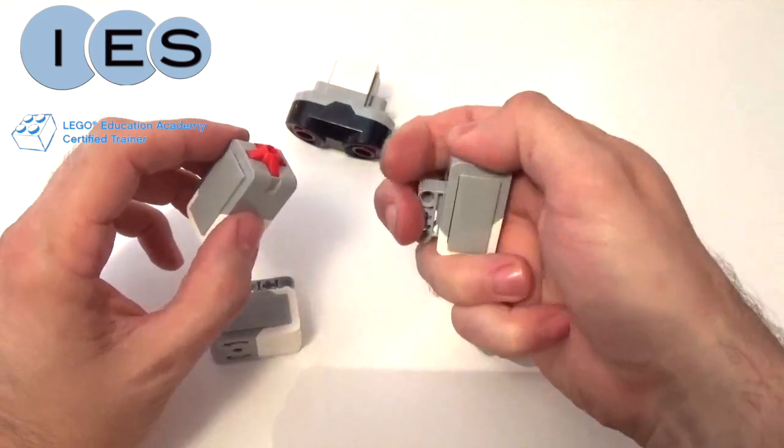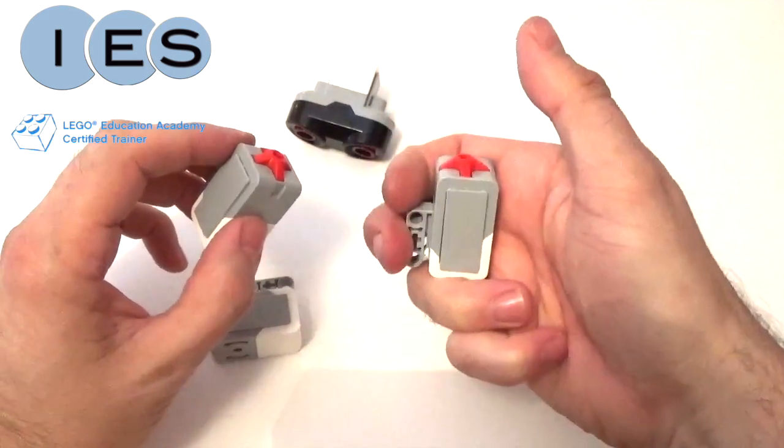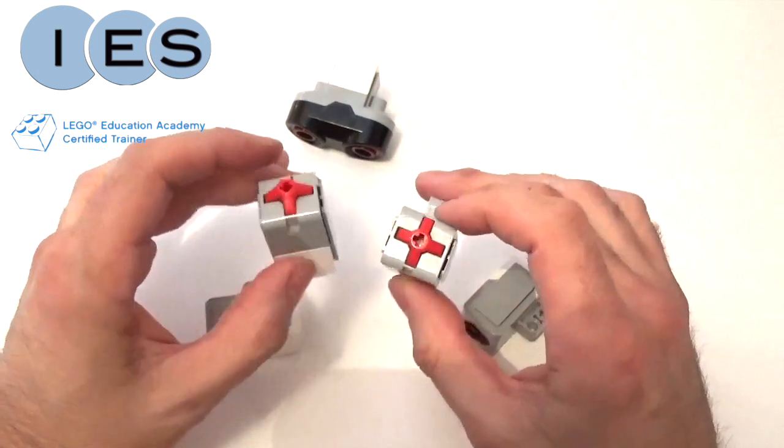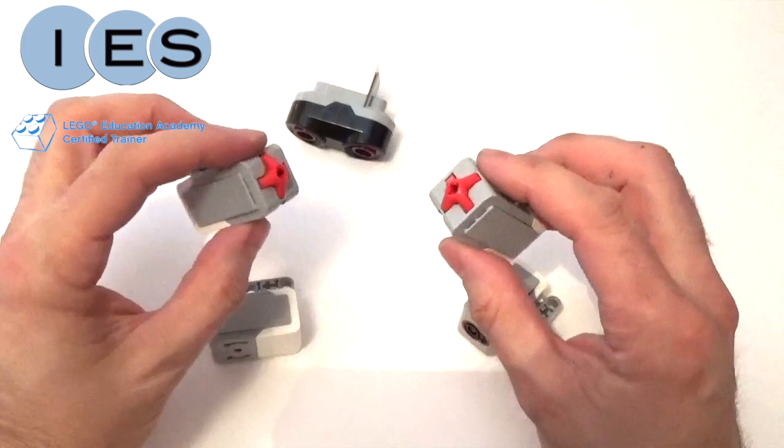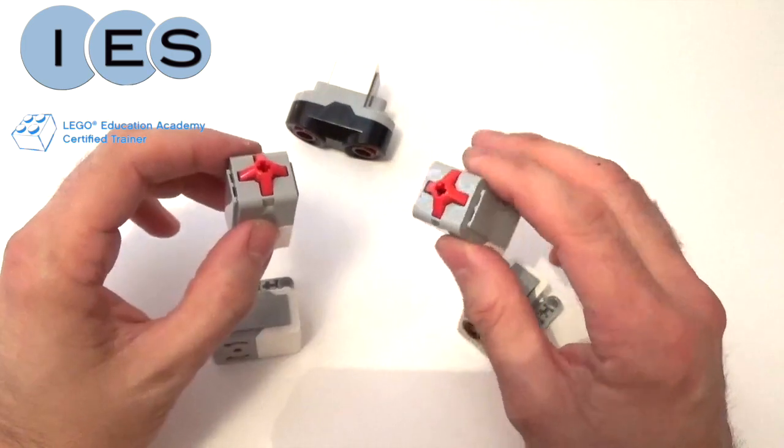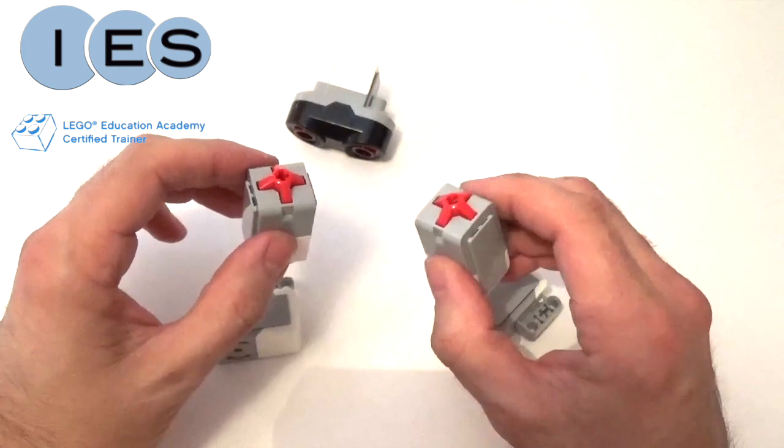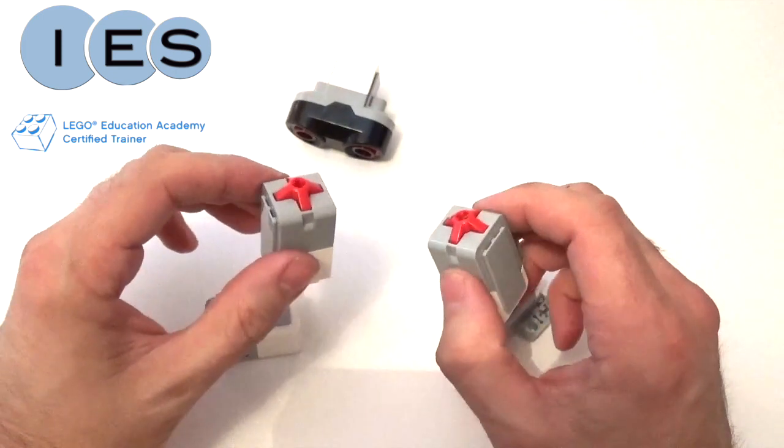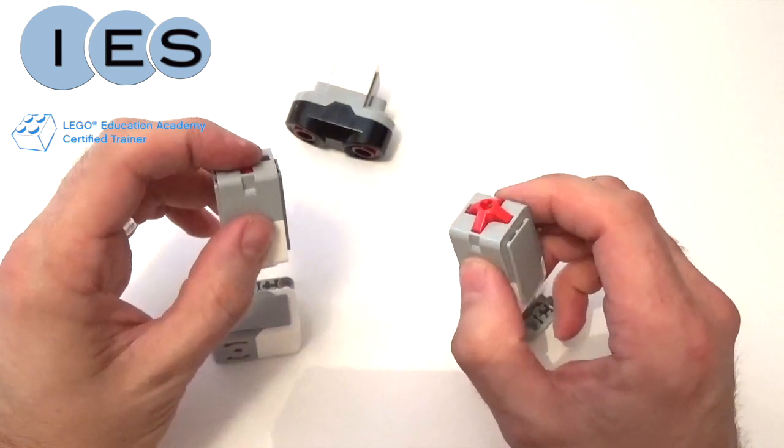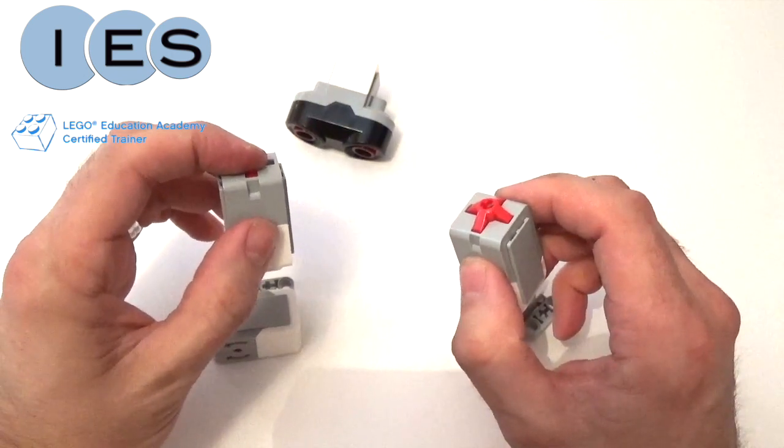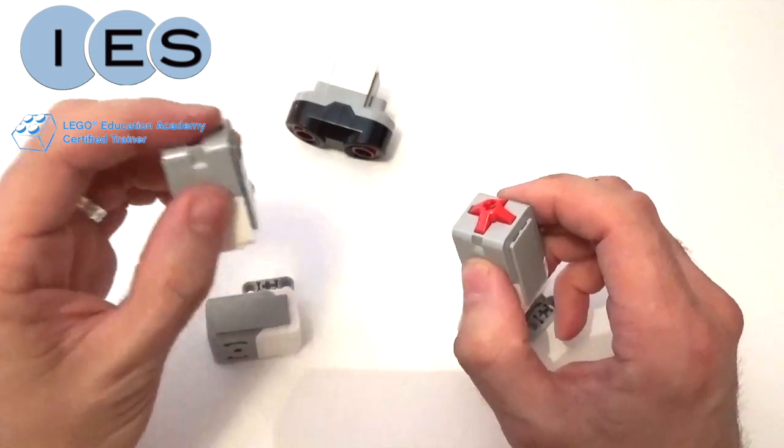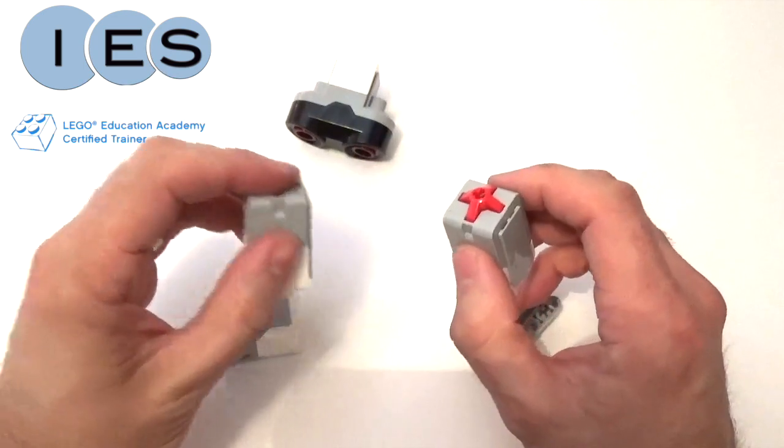The states are pressed, released, and bumped, which is a quick press and release. Depending on what we want to do, we can use these to trigger all sorts of different actions. For example, we might bump a touch sensor to start our motors running. We might press a touch sensor, particularly good if we've built a base robot that might run into an obstacle, and that touch might trigger a different action.